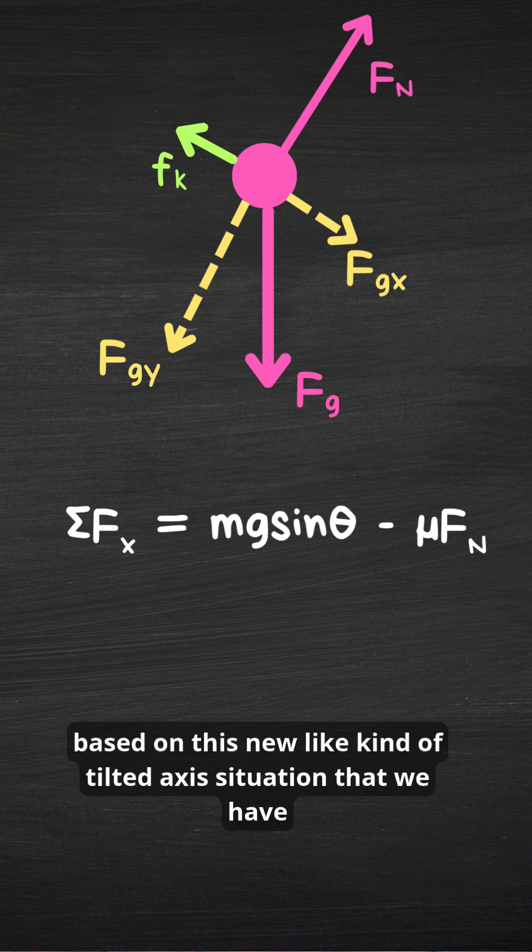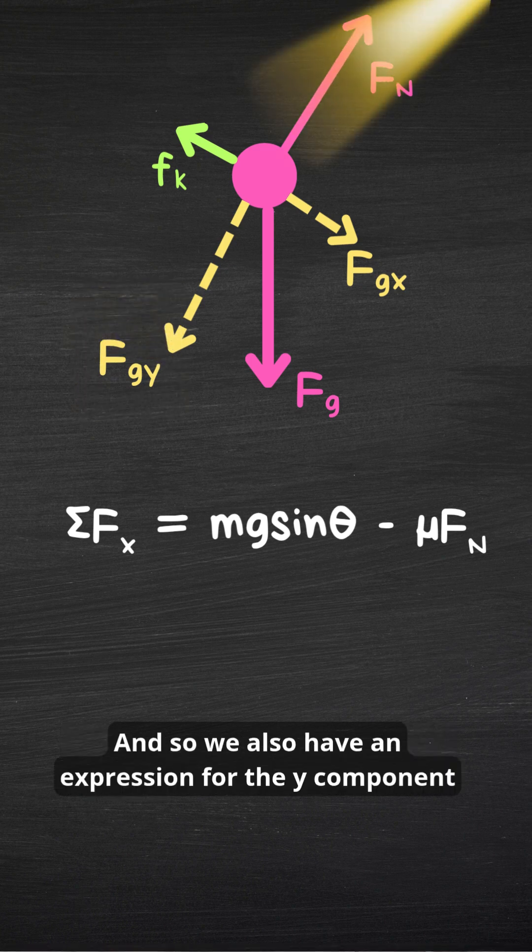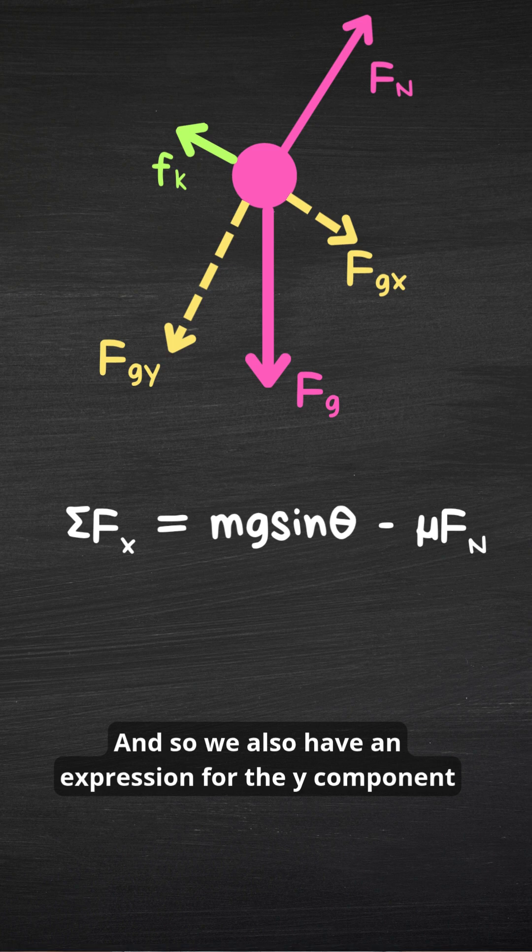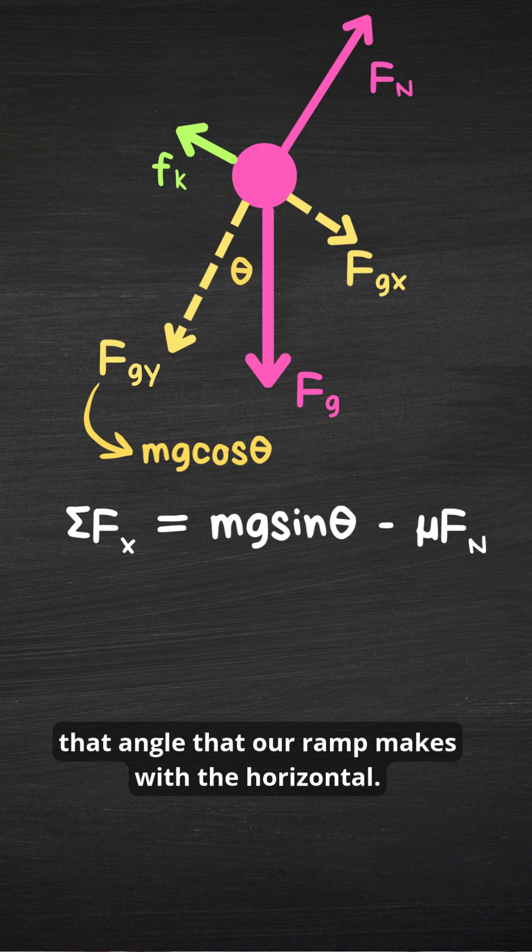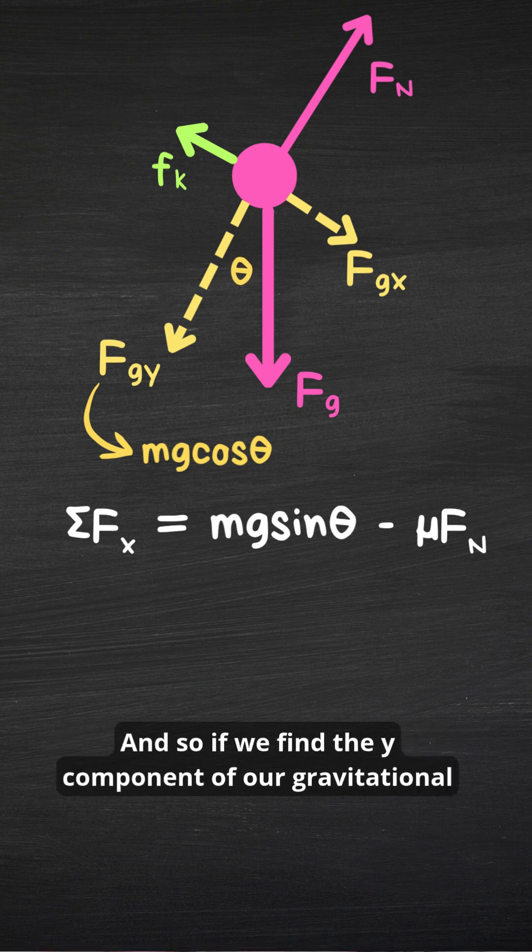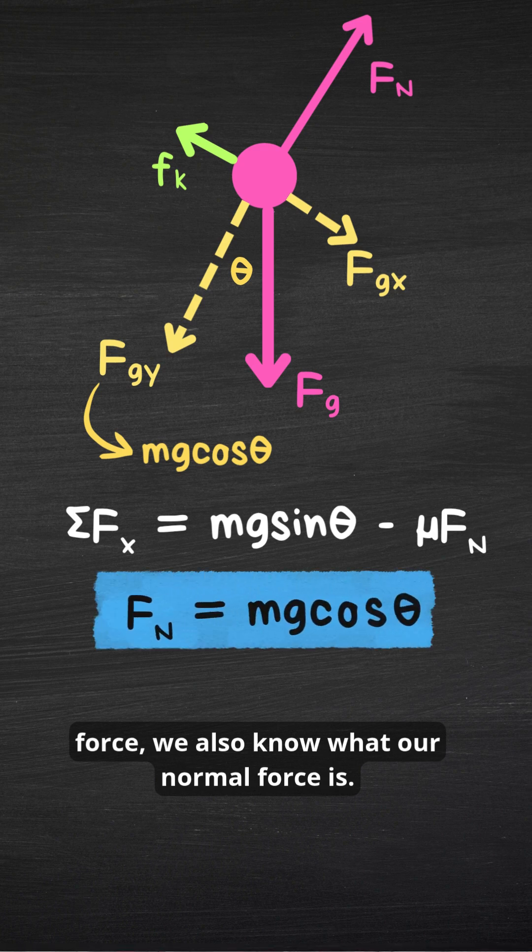So we know here, based on this new kind of tilted axis situation that we have going on, that our normal force points in the opposite direction of our y component of gravity. And so we also have an expression for the y component of gravity, which is mg times the cosine of, again, that angle that our ramp makes with the horizontal. And so if we find the y component of our gravitational force, we also know what our normal force is.